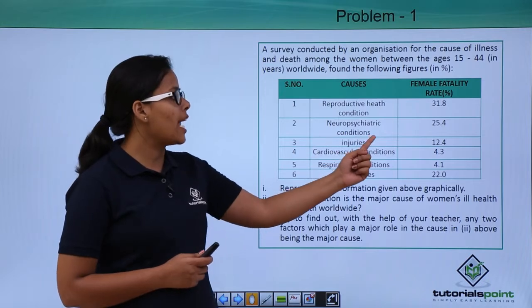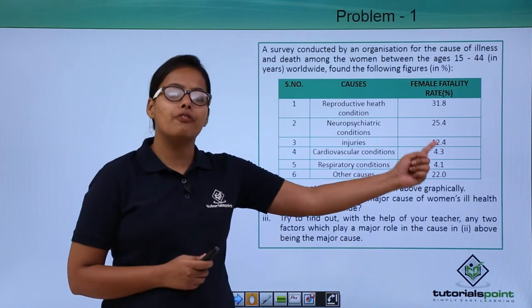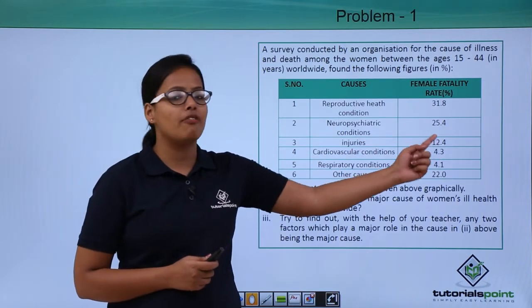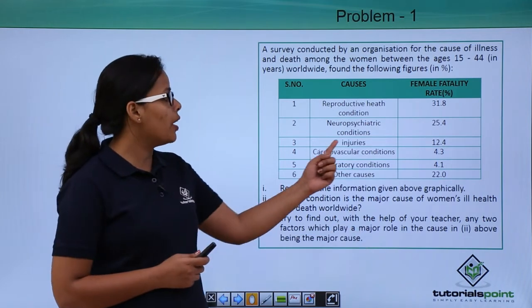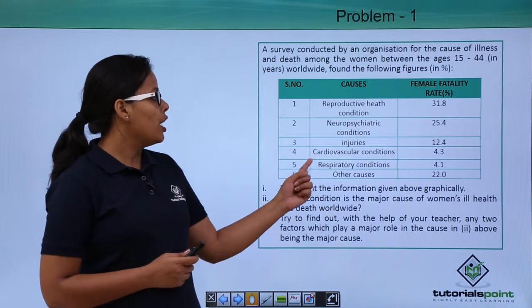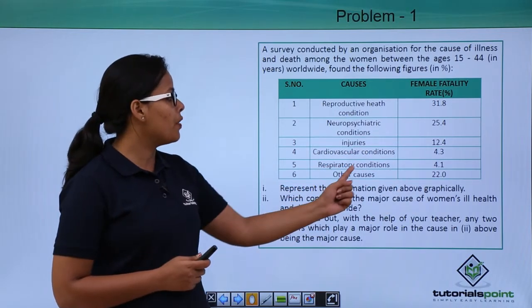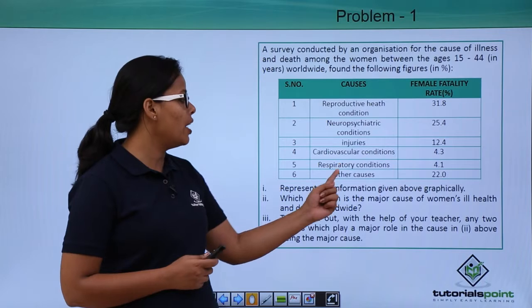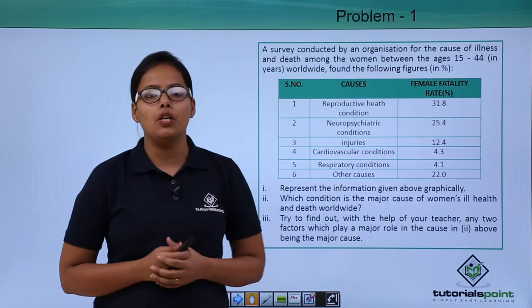Second cause is neuropsychiatric conditions with a female fertility rate of 25.4. Third is injuries at 12.4, cardiovascular conditions at 4.3, respiratory conditions at 4.1, and other causes at 22.